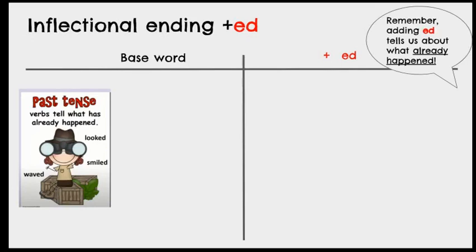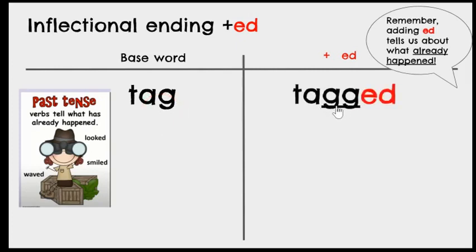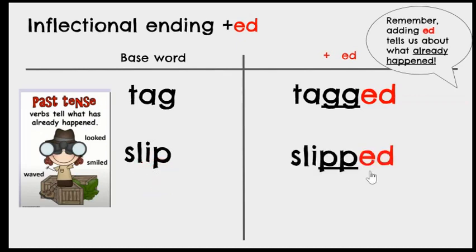Now let's look at the inflectional ending -ed. Adding -ed tells us about what already happened — it puts the verb in the past tense. Our first word is tag. We notice the A with consonant G. We need to double the G and then add -ed. When we double the consonant at the end, it keeps the vowel short. So tag becomes tagged. Next, slip: we double the P and add -ed to get slipped.